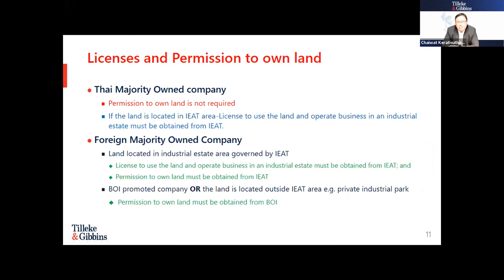The license and permission to own land is quite an important issue for a company to legally own land in Thailand, especially if you are a foreign majority-owned company. If you are a Thai majority-owned company, permission to own land is not required. However, if the land is located in an industrial estate area, you still need to obtain certain licenses from the IEAT, such as the license to use the land and operate a business, which must be obtained before you can operate in the IEAT area.